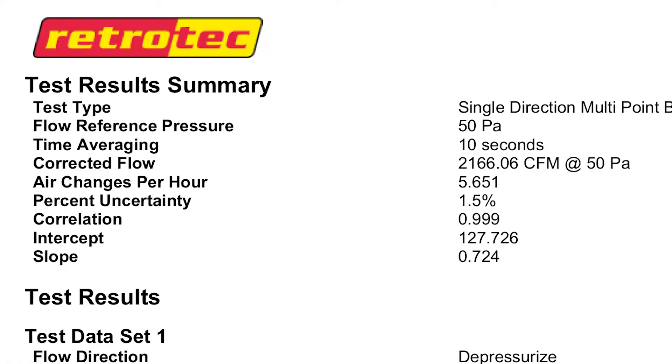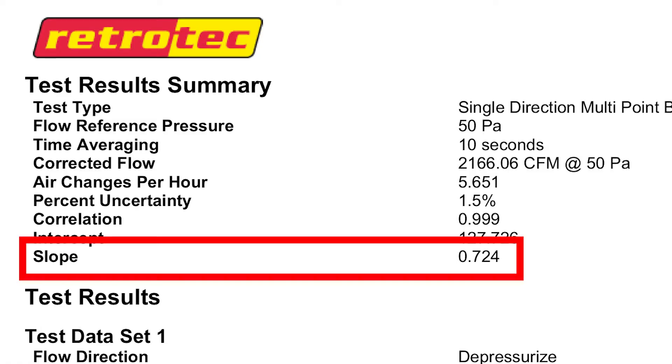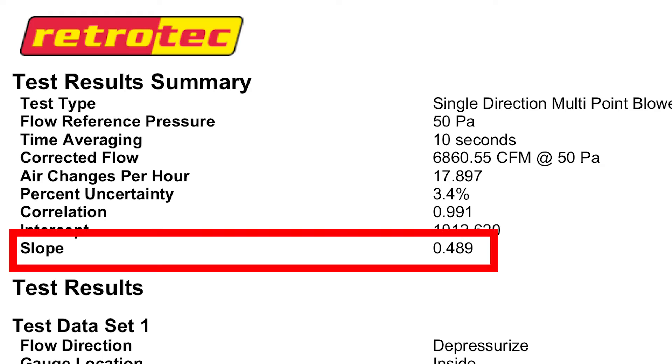As an example, I ran a blower door test on my house doing a multi-point test — just a regular test — and we can see what that pressure exponent is. But just to show you how it can reduce if you have a wide open hole, I popped a window open, did it again, and we can see that slope or pressure exponent drop down to 0.49.